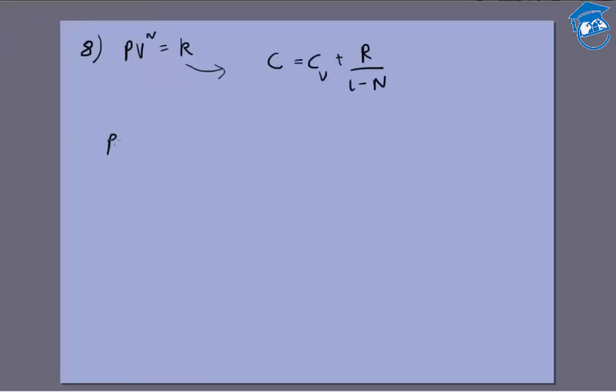PV to the power n equals k. That means PV we can write as nRT, so nRT into V to the power n minus 1 equals k, which means T equals k by nR.